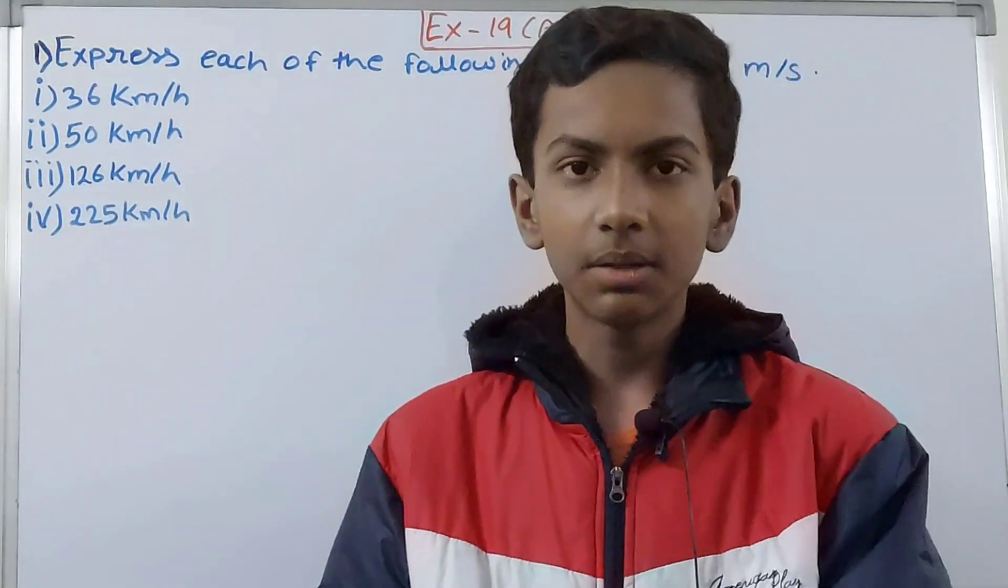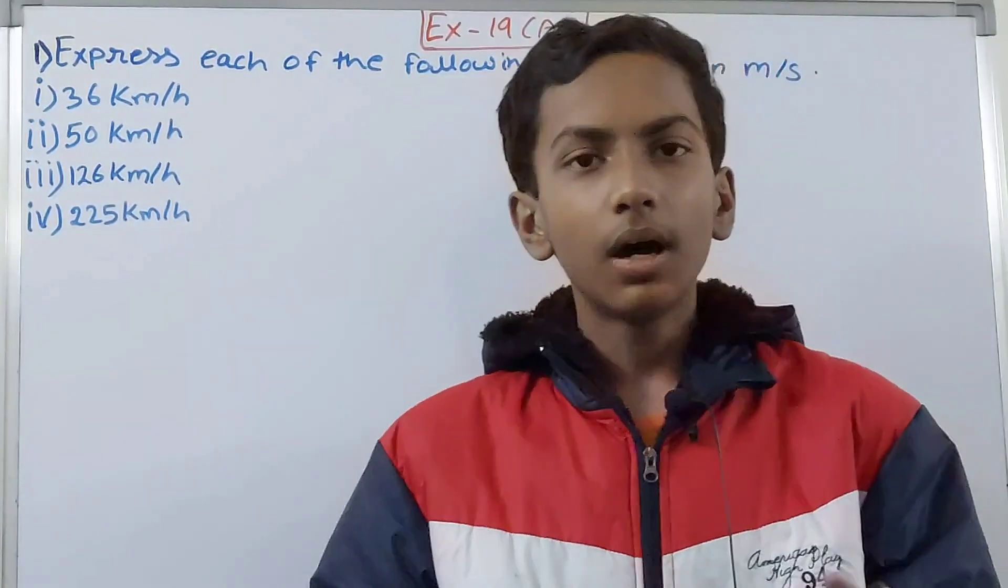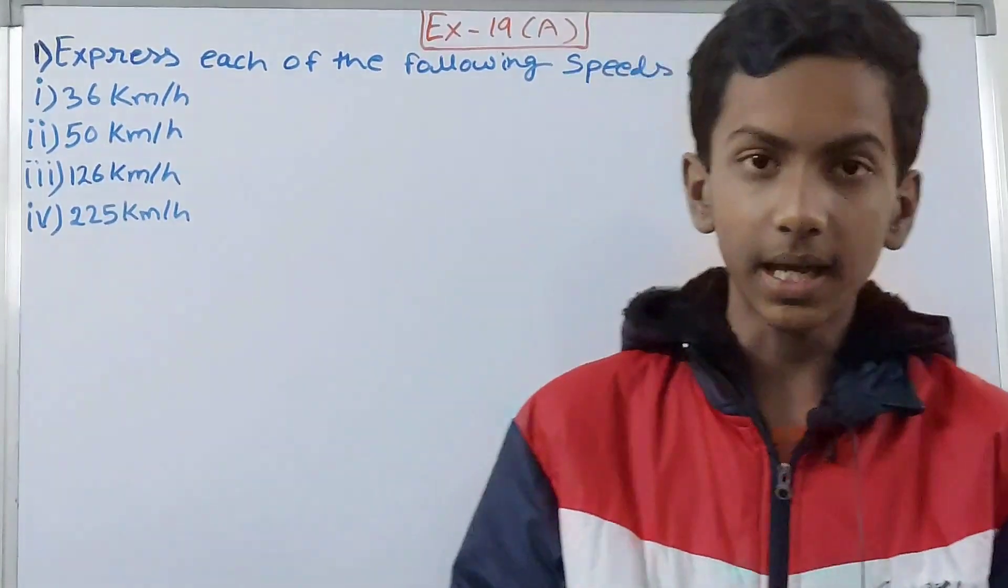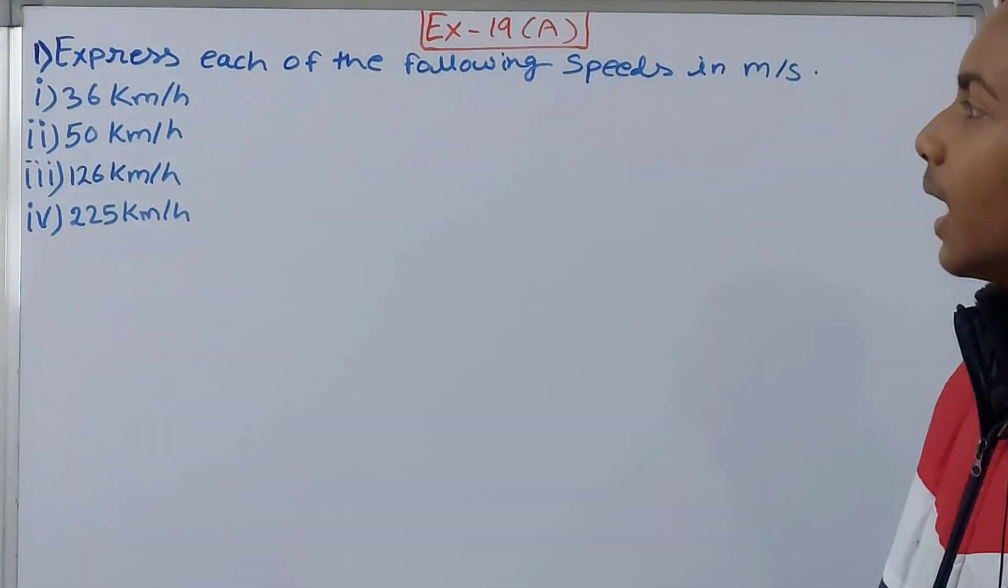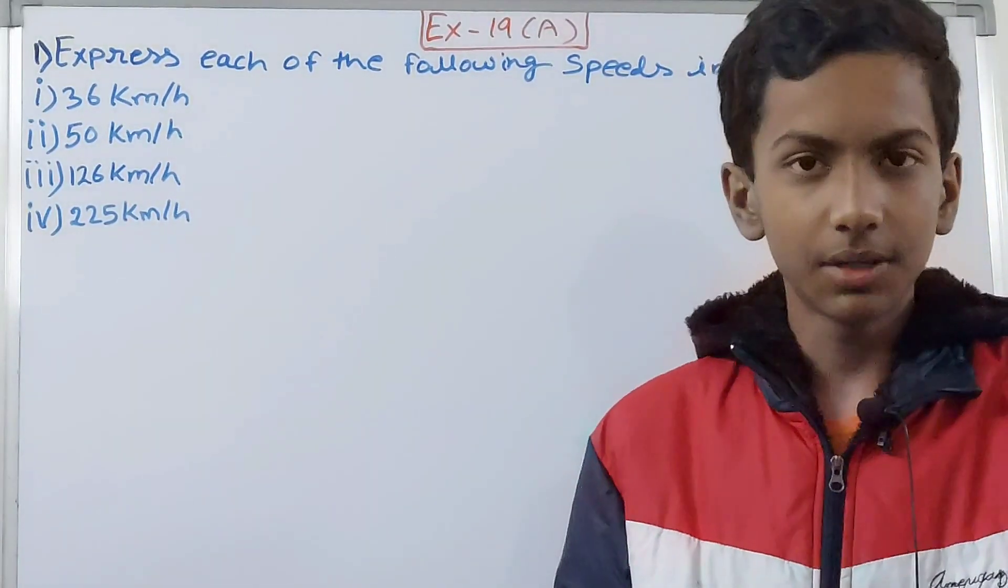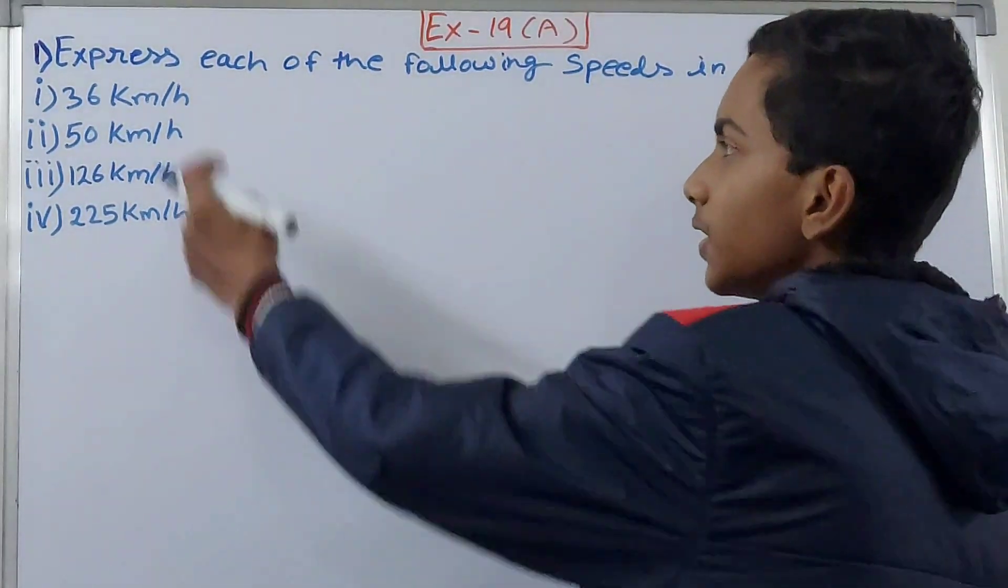For calculating speed we do distance upon time, that is divide the distance by time. Now you see here, we do not have to calculate the speed but we have to change the unit of the given speed. First is 36 kilometers per hour.